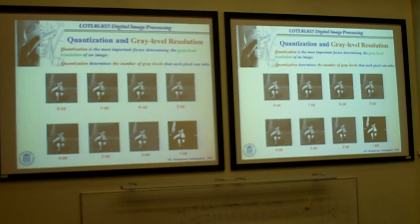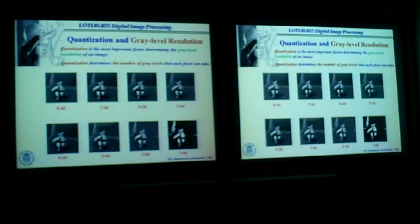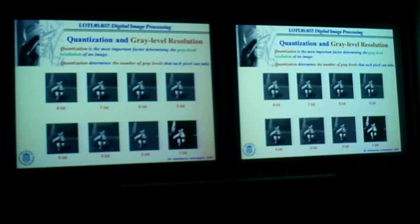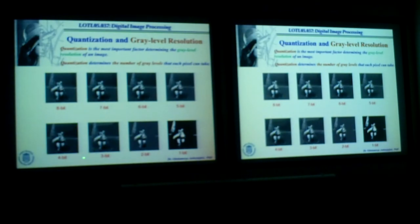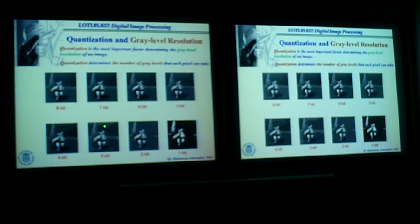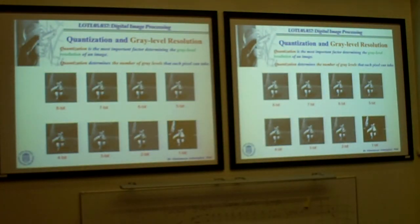The problem with gray level resolution is that as we reduce it — from 8 bits to 7 bits — we kill the least significant bit, which has a small effect. But as we continue reducing, we start to introduce something called the contour effect: visible artificial contours appear in smooth areas like shadows. As we reduce gray level resolution further until we get to 1 bit, we have a binary image — black and white. So from 8-bit, if we keep reducing, we reach 1-bit representation.